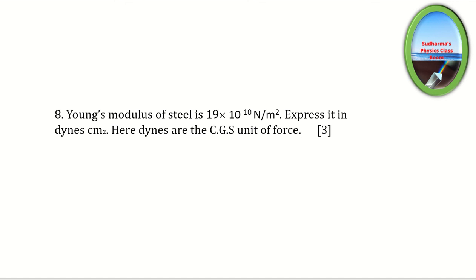Question 8 (3 marks): Young's modulus of steel is 19 × 10¹⁰ Newton per meter squared. Express it in dynes per centimeter squared. Dynes are the CGS unit of force. This involves conversion of units from one system to another using dimensional analysis.